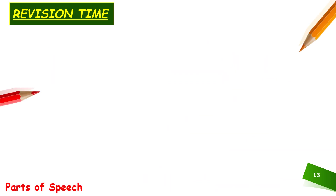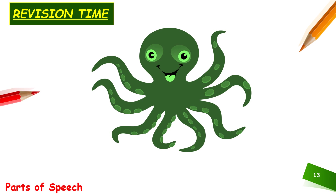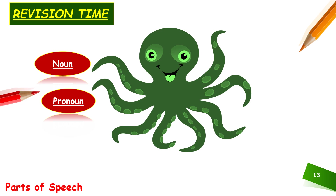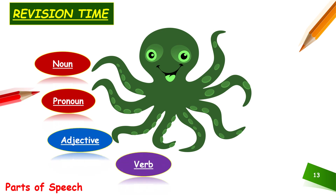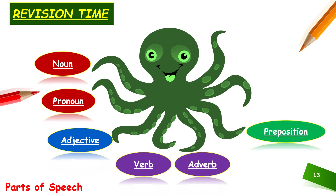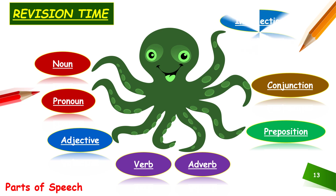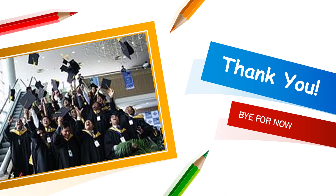Well, by now I am sure you all know what parts of speech are. There is an octopus here — he wants us to revise. So let us revise just for this octopus: noun, pronoun, adjective, verb, adverb, preposition, conjunction, interjection — they all together are known as parts of speech. I am sure everything is all clear to all of you. Thank you so much for being there, and bye for now — I will meet you all in the next session.